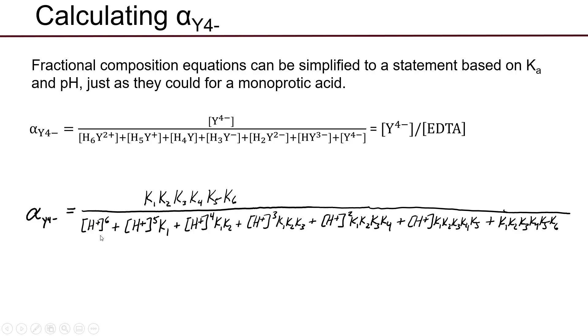In the denominator, you have a series which takes the form: proton concentration to the 6th, plus proton concentration to the 5th times Ka1, plus proton concentration to the 4th times Ka1 times Ka2, plus proton concentration to the 3rd times Ka1 times Ka2 times Ka3. And it continues all the way out, summing up again and again until you end with the term that you have in your numerator, where there is no proton concentration, and it's Ka1 times Ka2 times Ka3 times Ka4 times Ka5 times Ka6.